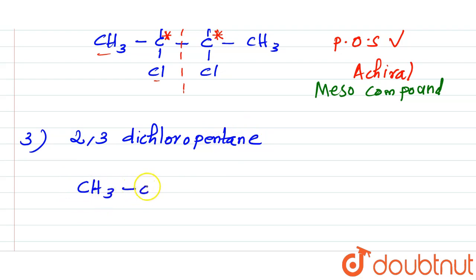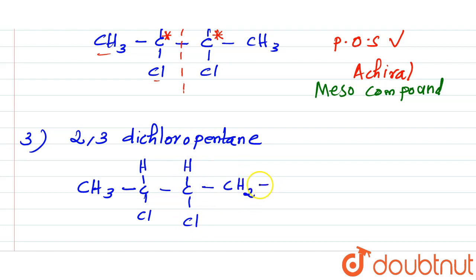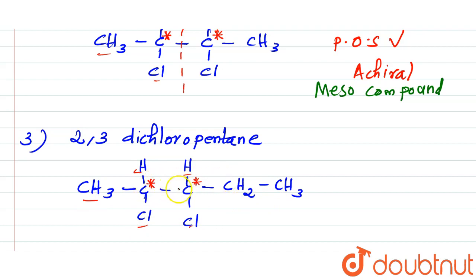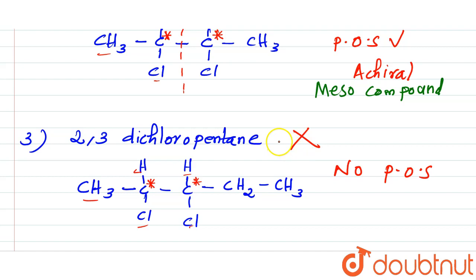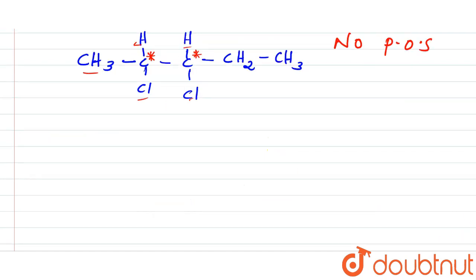The third option is 2,3-dichloropentane. The structure of 2,3-dichloropentane is CH3-CHCl-CHCl-CH2-CH3. In this compound we can see two chiral centers — this carbon is one asymmetric carbon and this carbon also one asymmetric carbon, because four different groups are attached to these two carbons. However, this compound has no plane of symmetry, so it is not a meso compound.